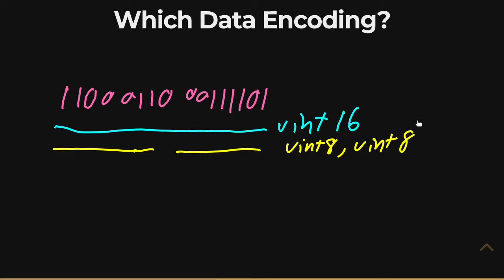Or we could say, well, that's not right either. We want to encode this instead as two ASCII strings, two ASCII characters. And so you could say, okay, I got this one, and I got this one.